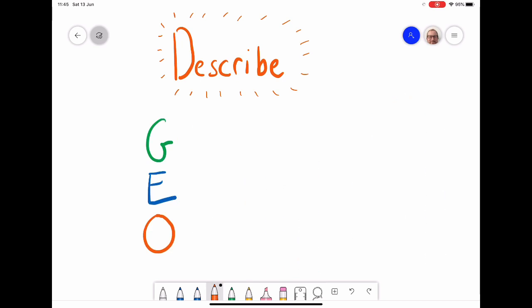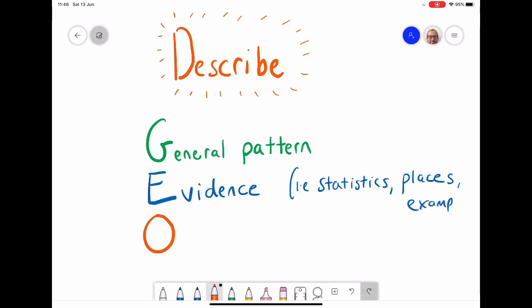The strategy we use in geography for tackling describe questions is GEO. The G means I'm looking at the general pattern, saying what I can see. Next, I need to back up whatever I'm going to say about that pattern with evidence. That can be sometimes stats, sometimes place names, sometimes examples. The last one is odd one out. Is there something that doesn't meet the pattern that I need to point out? You don't always have to have an oddity, but if there is one, it's always good to point it out.